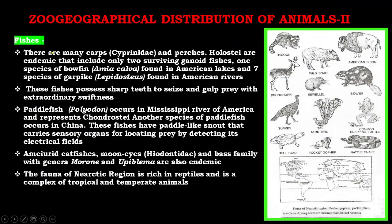Fishes are represented by many carps belonging to families Cyprinidae and Percidae. Endemic holosteans include only two surviving ganoid fishes: one species of bowfin Amia calva found in American lakes, and seven species of garpike belonging to genus Lepisosteus found in American rivers. These fishes possess sharp teeth to seize and gulp prey with extraordinary swiftness.